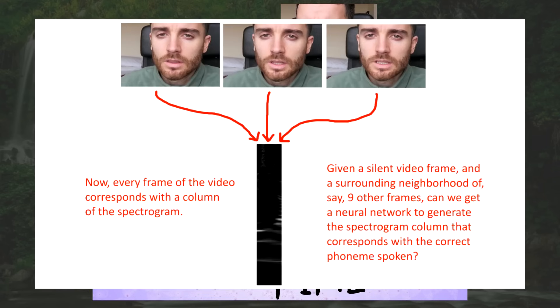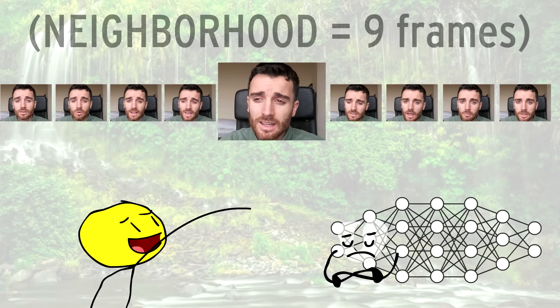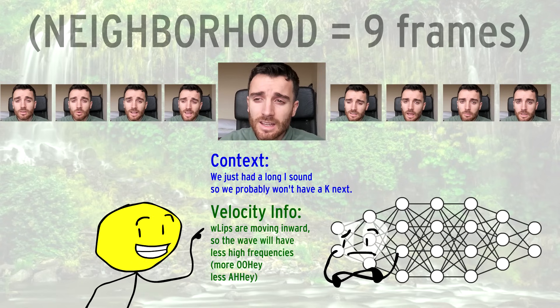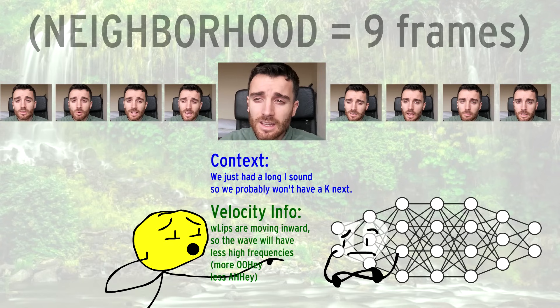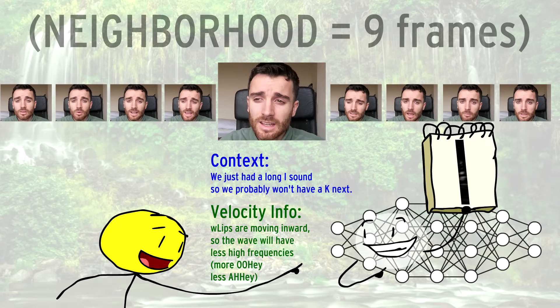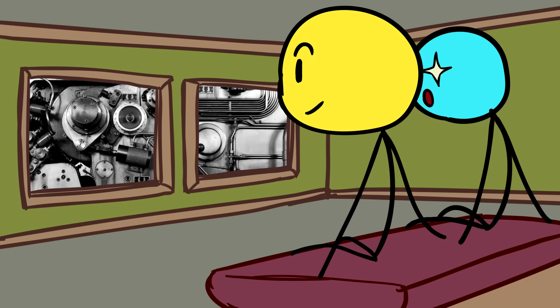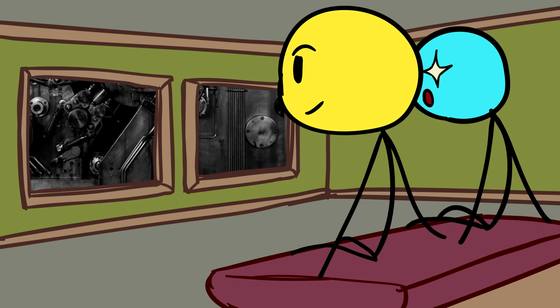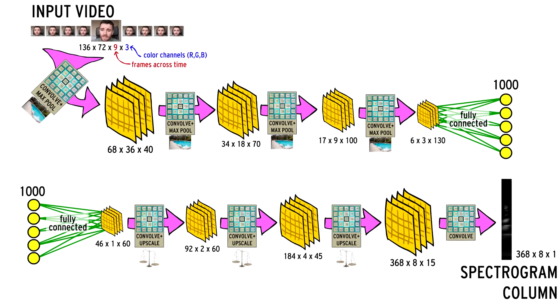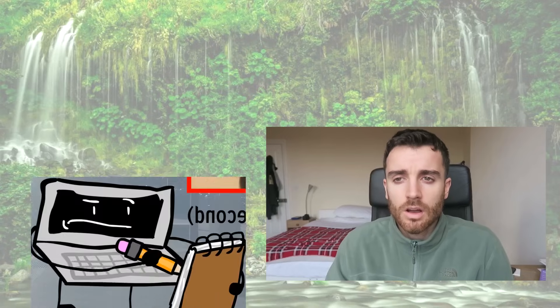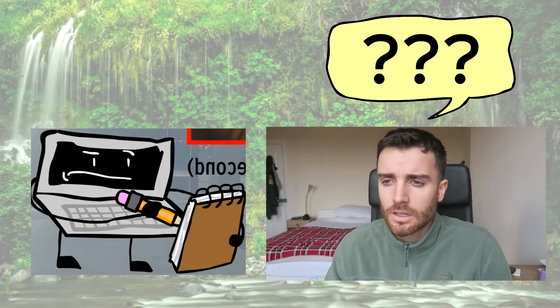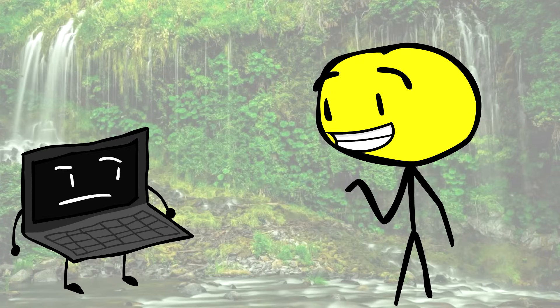That transforms our problem into this: given a silent video frame and a surrounding neighborhood of, say, 9 other frames to give context and velocity information, can we get a neural network to generate the spectrogram column that corresponds with the correct phoneme spoken? Here's the neural network architecture. Let's see if this algorithm can figure out what the heck this guy is saying — here's just the visuals of this guy talking. What sounds do you think he's making?